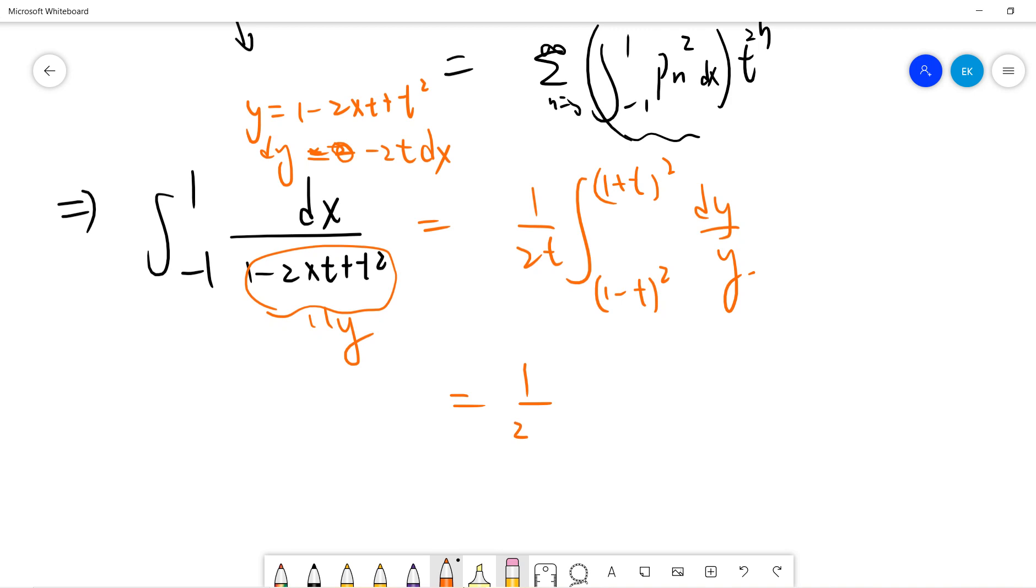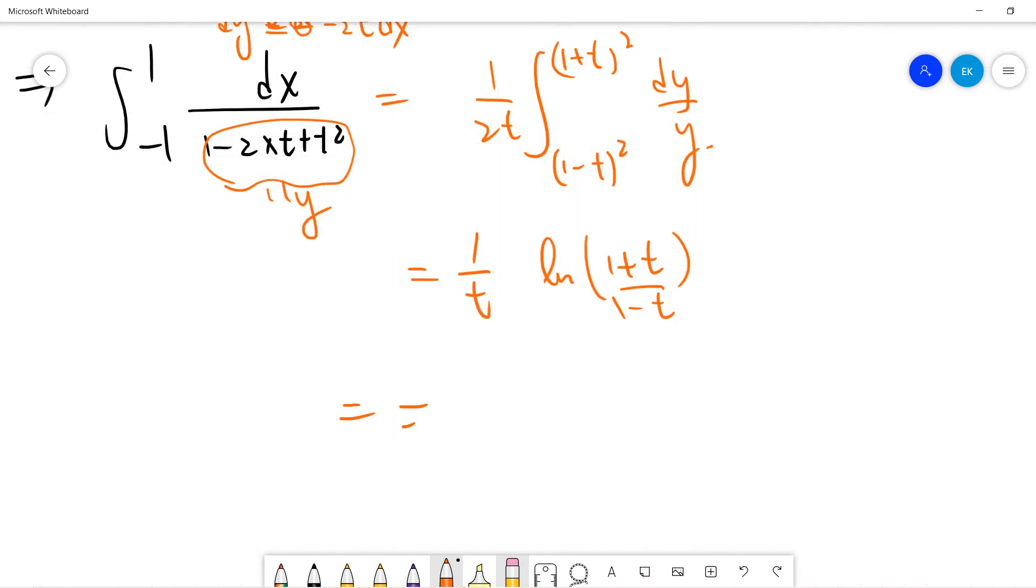And this is log y. So it's just log 1 plus t, 1 minus t, and then there is a half, there is a 2 here, so you just delete this, cancel with this 2, so you get it. And this is just 1 over t, log 1 plus t minus log 1 minus t.